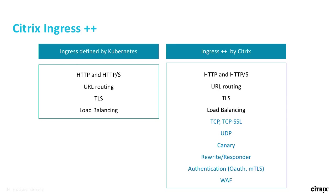Kubernetes native ingress is specified only for HTTP and HTTPS with routing, encryption/TLS, and load balancing — necessary but not sufficient. Most customers need more: TCP, TCP SSL, UDP, canary routing, layer-7 functions like responder capabilities, authentication, and WAF. We've added all of that and call it Ingress++. That's what customers actually need, and that's what we've built.